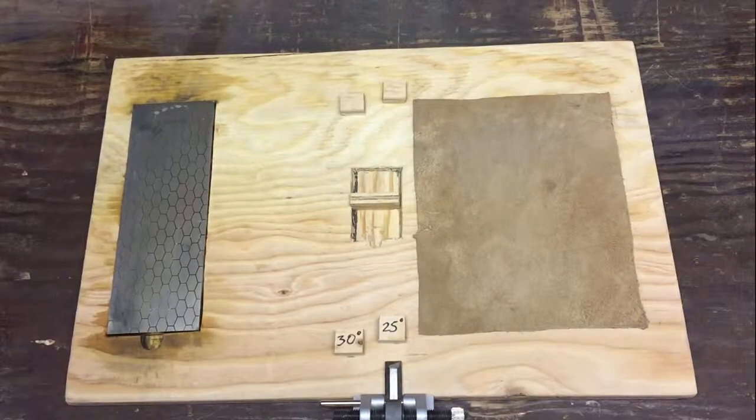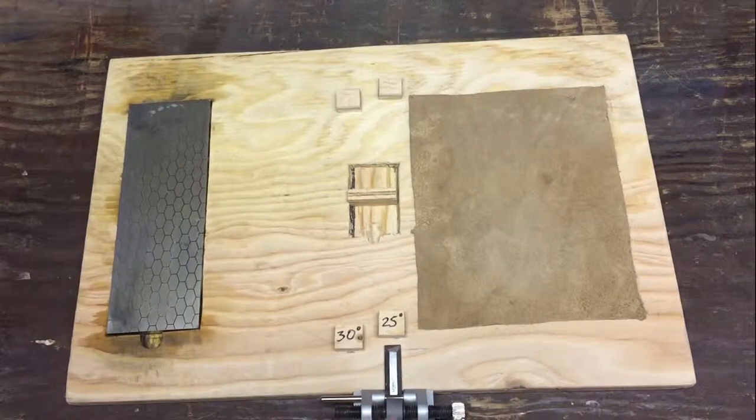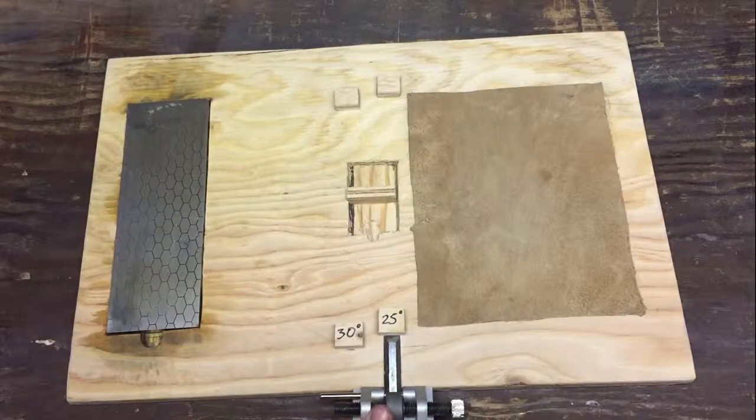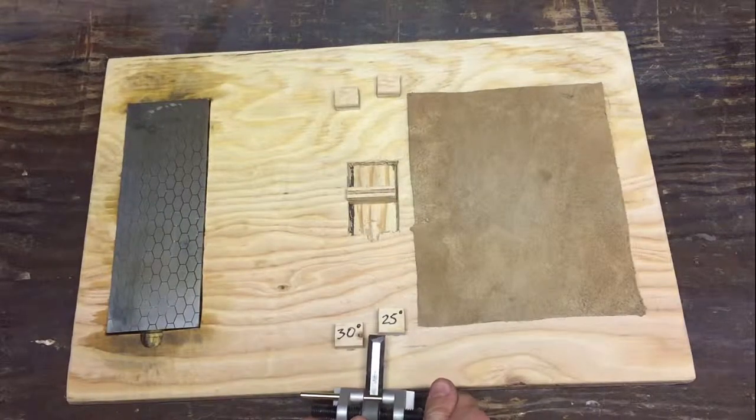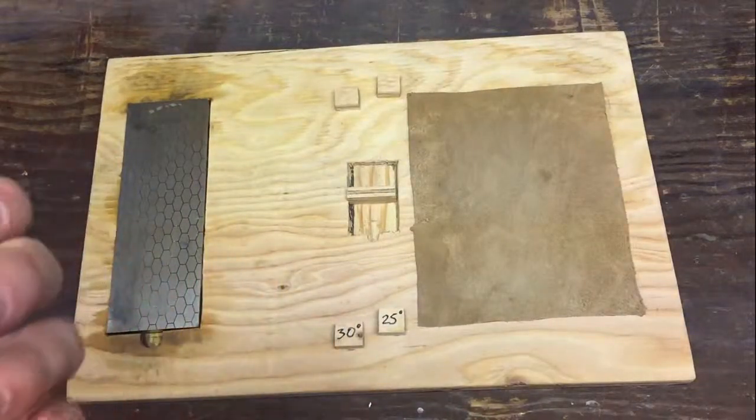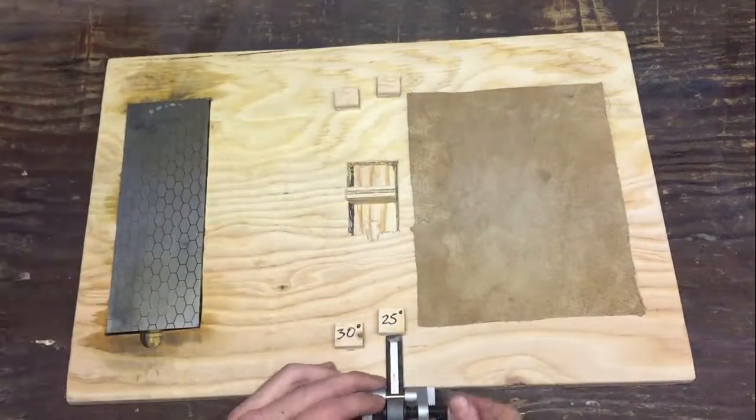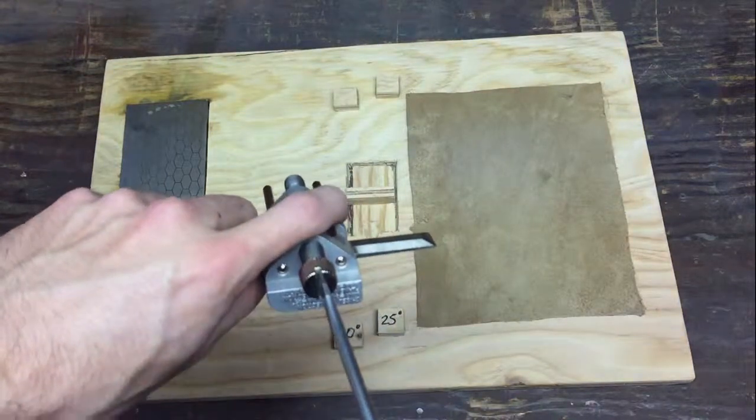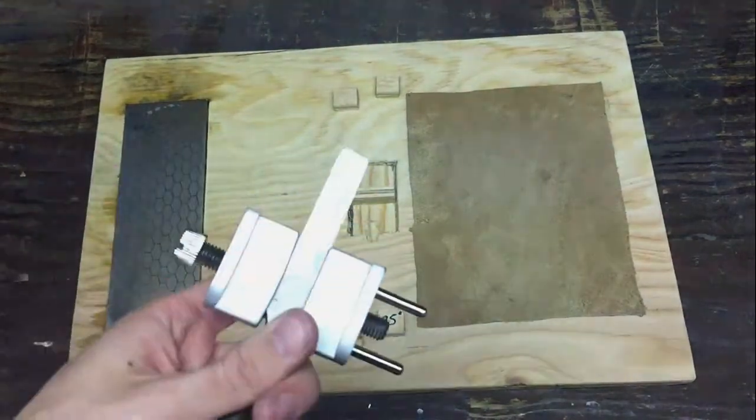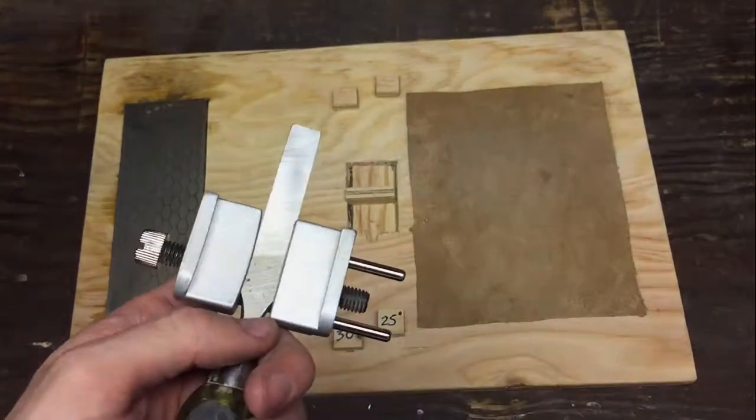Once your chisel touches the stop block, you know that's the right length. And you just tighten it. And it's kind of hard the first few times, like I said. So it took me about three times and I got it. And then you just tighten it up with a screwdriver to be sure that it won't move.